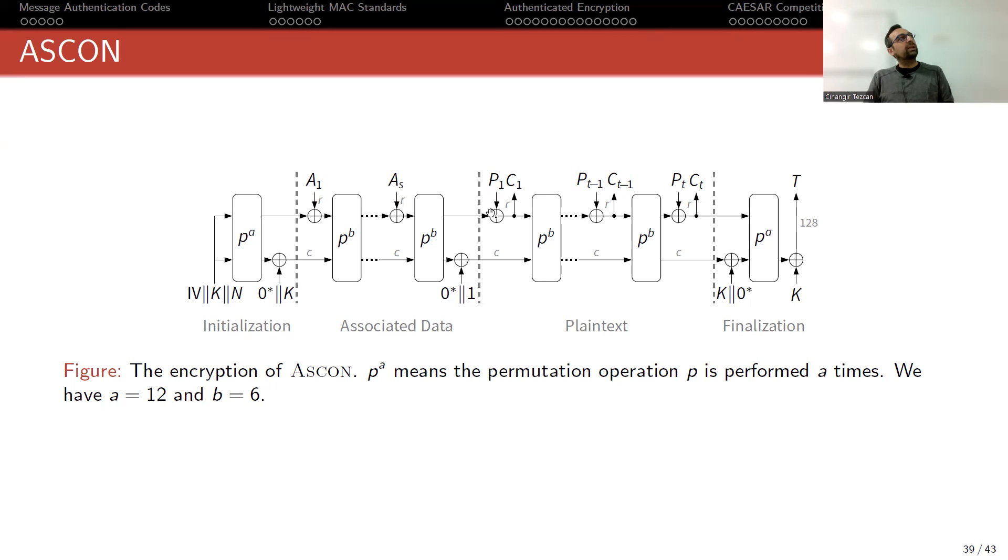You put r bits of your plaintext and XOR it with the top r bits of your internal state. The result is r bits of ciphertext block. Then you perform the permutation again, do it again, permit again, do it again. So again, these are 6 many times of permutation when all of the plaintexts are processed and you produce the ciphertext blocks.